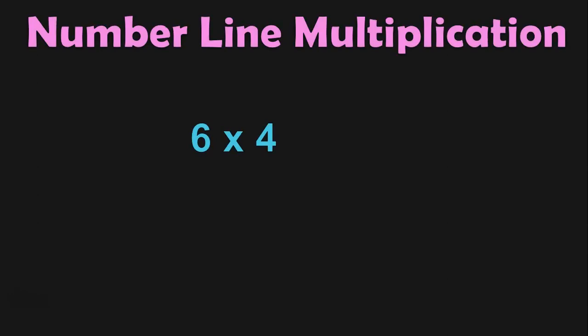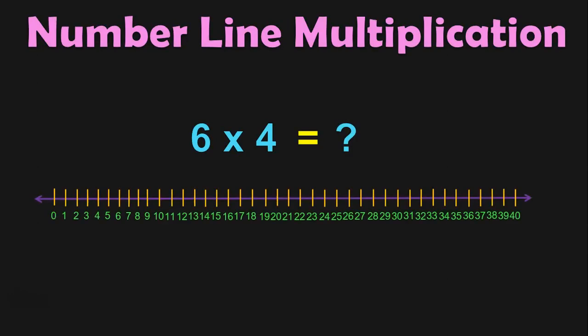Let us do one more sum. What is 6 into 4? Here we are going to take a Number Line with numbers 0 to 40. 6 into 4 means 6 groups of 4 items each — 6 jumps with 4 numbers in each jump. Starting from 0: first jump reaches 4, second jump 8, third jump 12, fourth jump 16, fifth jump 20, and in the sixth jump you reach number 24. So, 6 into 4 is equal to 24.